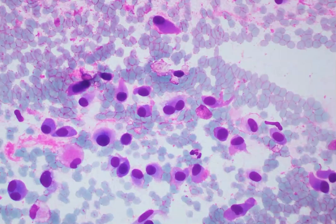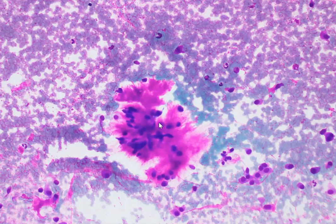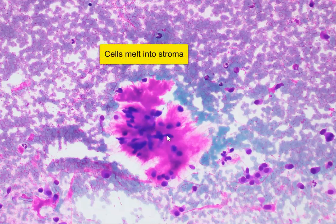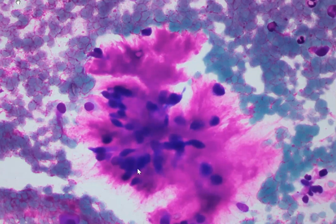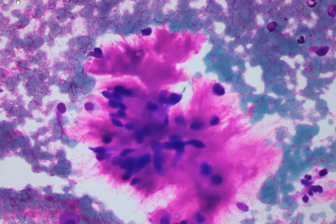Again, we see the dispersed plasmacytoid cells, which may represent myoepithelial cells. Over here is an interesting feature where we can see the plumper epithelial-looking cells kind of melting in or blending into this metachromatic stroma, and in the process they become a little more spindly or stellate in shape. We can also very clearly see the fibrillary nature of the metachromatic stroma here. These are two features that are very classical for pleomorphic adenoma: the melting of the plump epithelial cells into the stroma, and the fibrillary texture of this metachromatic stroma.